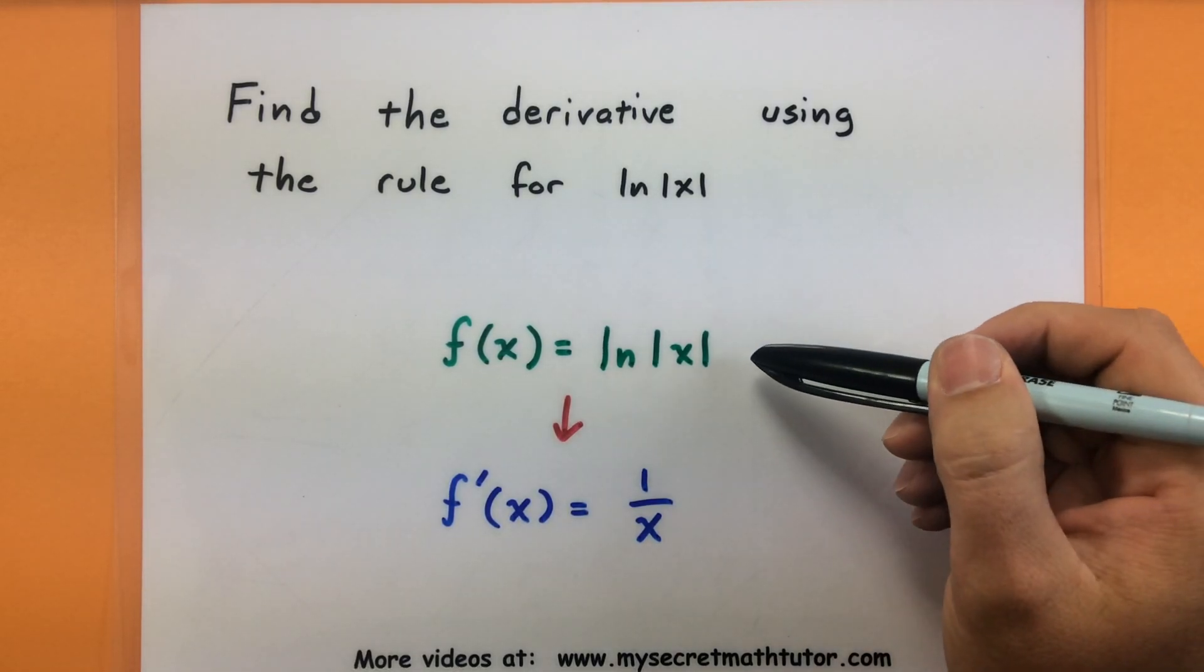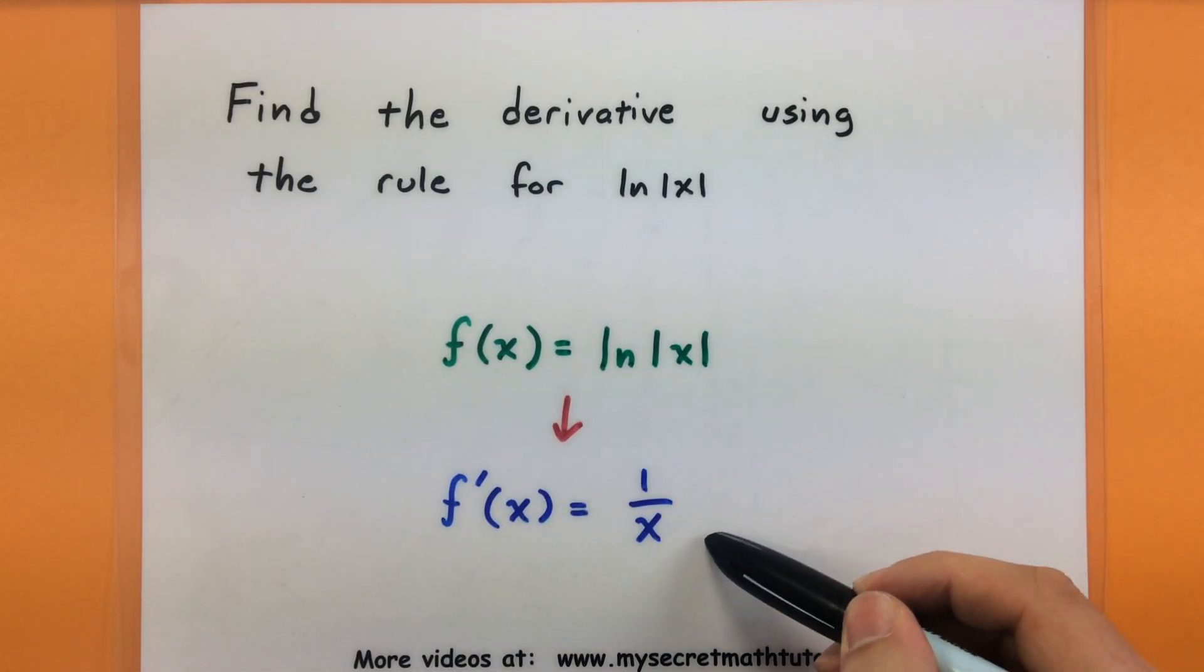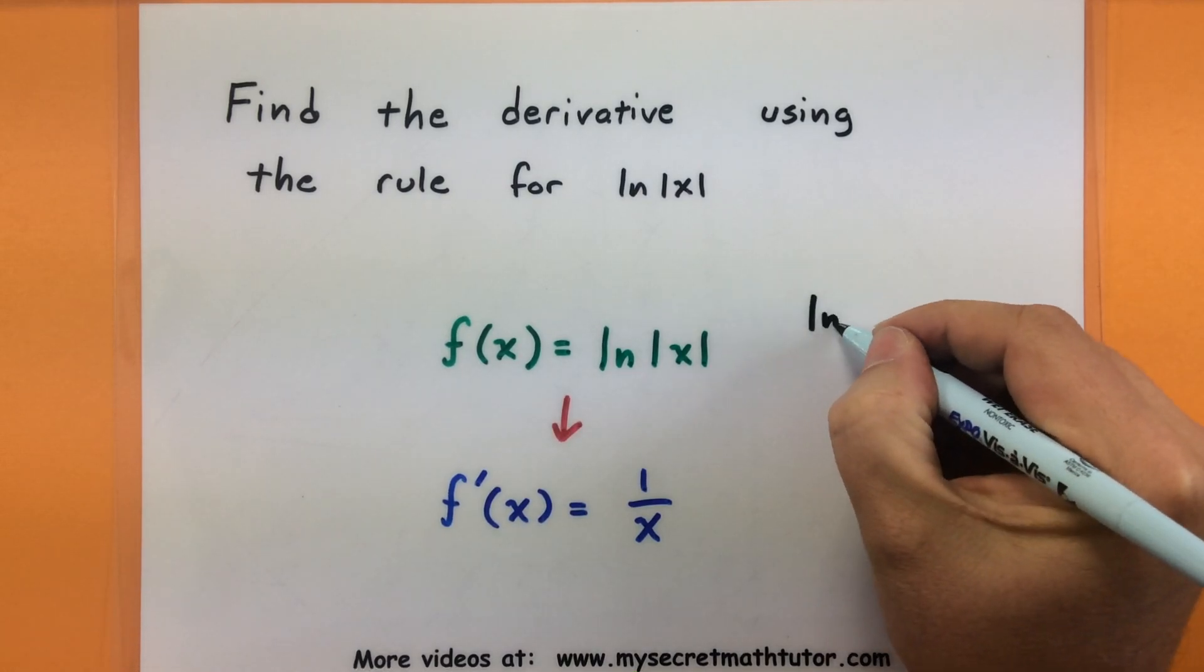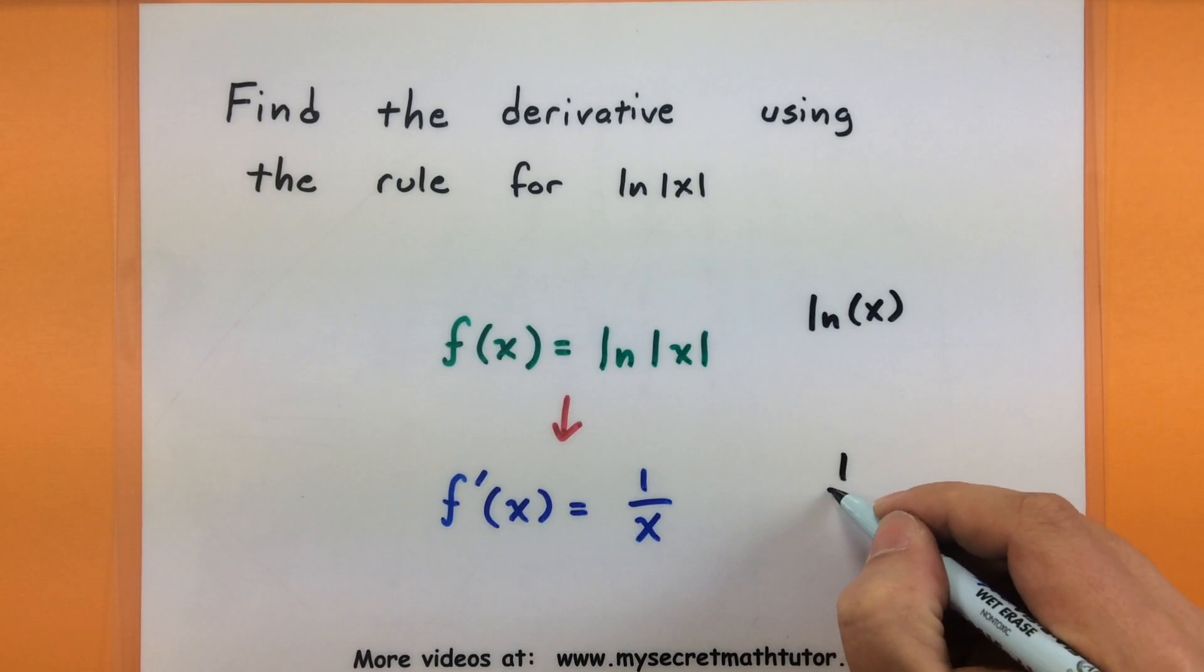And the rule is simply this. If you have your function, say something like natural log of the absolute value of x, its derivative is just 1 over x. Now you may see a few instances where we have the natural log of just x, and its derivative will still be 1 over x.